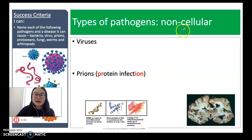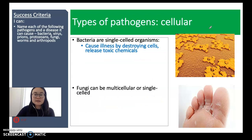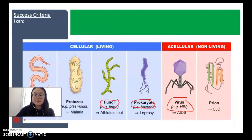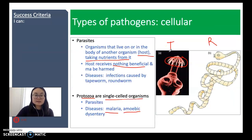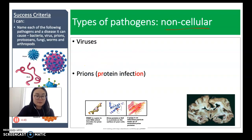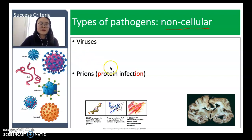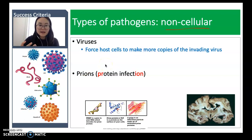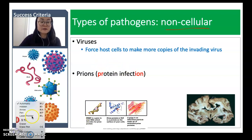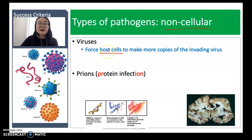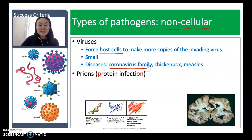Now we're looking at non-cellular pathogens — they are not living. We've looked at the cellular ones; now we're looking at the acellular, non-living pathogens, of which we'll discuss two. Viruses are considered non-cellular because they can't replicate or divide and produce more of themselves without a host, such as a human, animal, or plant. They're extremely tiny. The coronavirus family is one example of a virus, as are chickenpox and measles, which are also caused by viruses.